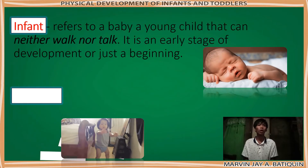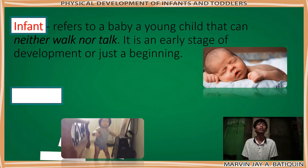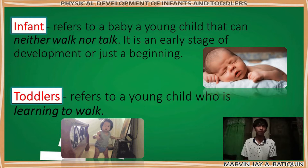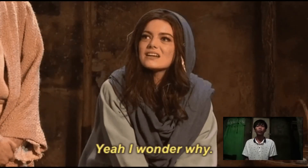Infant refers to a baby — a young child that can neither walk nor talk. It is an early stage of development, just a beginning. Toddler refers to a young child who is learning to walk. We tend to wonder how infants develop their body, since we are focusing here on physical development.